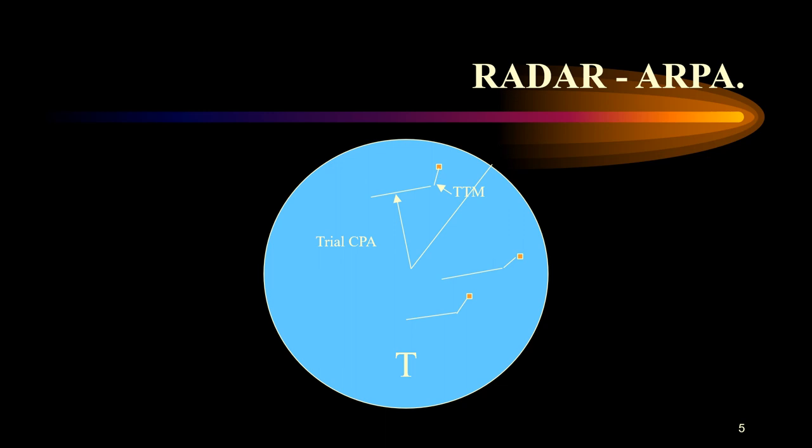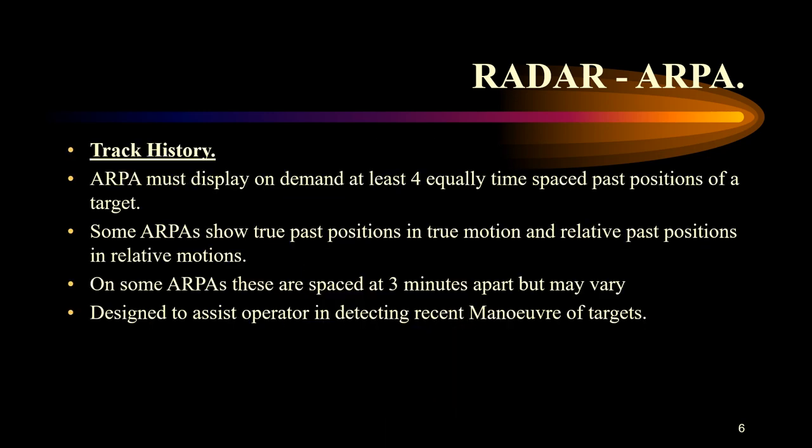You can see here how, based on a trial maneuver, you can actually work out the expected CPA from vessels — especially those on a collision course or vessels which are nearby — and how your change of course will affect your resultant CPA with other vessels, even if they may not be on a direct risk of collision with you.